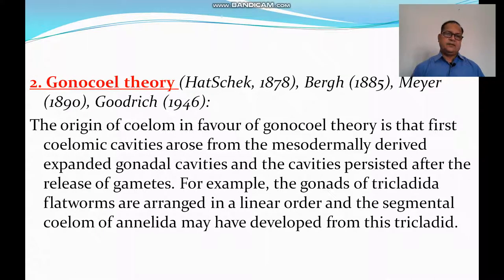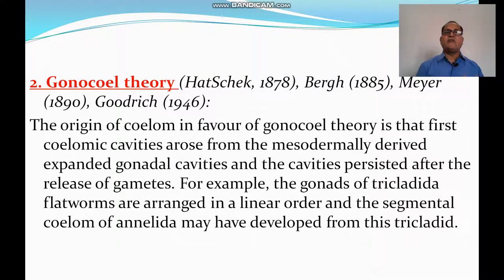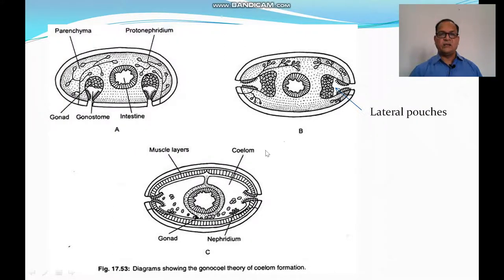The second is the Gonocoel theory, proposed by Hatschek, Bergh, and Meyer, and supported by Goodrich. This theory states that the first coelomic cavity arose from expanded gonadal cavities derived from mesoderm, and these cavities persisted after the release of gametes. For example, gonads of tricladida flatworms are arranged in a linear order, and the segmental coelom of annelids may have developed from tricladida. The diagram shows gonads thrusting into the coelom and parenchyma, with lateral pouches forming the coelom.